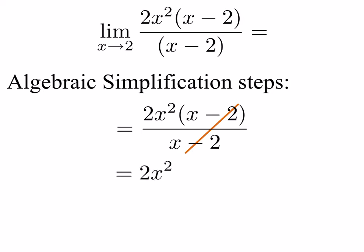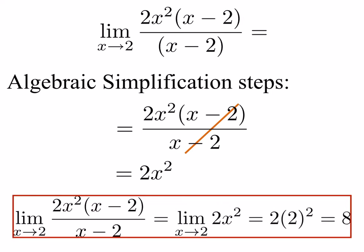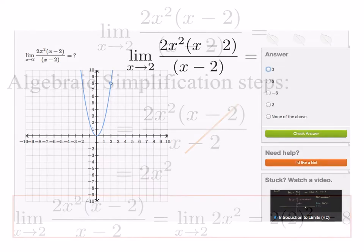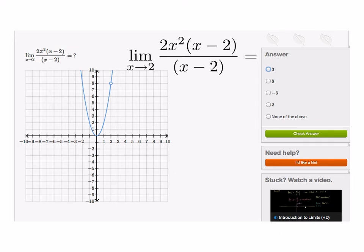After the algebraic simplification, that whole expression looks like 2x squared. So I'm ready to take my limit now. The limit as x approaches 2 of 2x squared times x minus 2 over x minus 2 is going to be the same thing as the limit as x approaches 2 of 2x squared. I'll simply plug in my limit point: that will be 2 times 2 squared, which is 8. Looking at the picture, as I approach 2 from the left and the right, the functional values get closer and closer to 8.